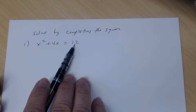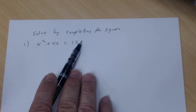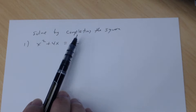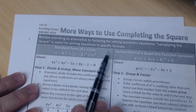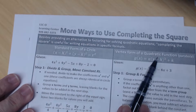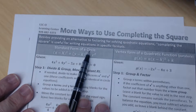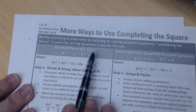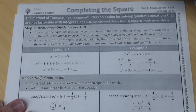For the most part, the quadratic formula is more efficient, but you need to practice completing the square because you'll need it when we talk about circles and graphing quadratic functions. To rewrite a quadratic function in vertex form, you must complete the square. To write the equation of a circle in standard form, you must also complete the square.